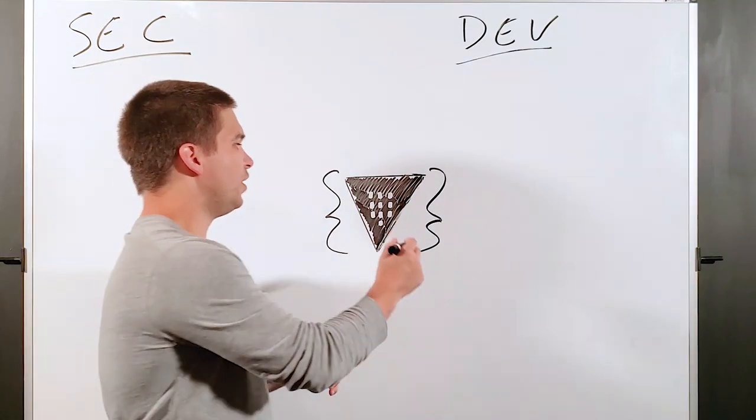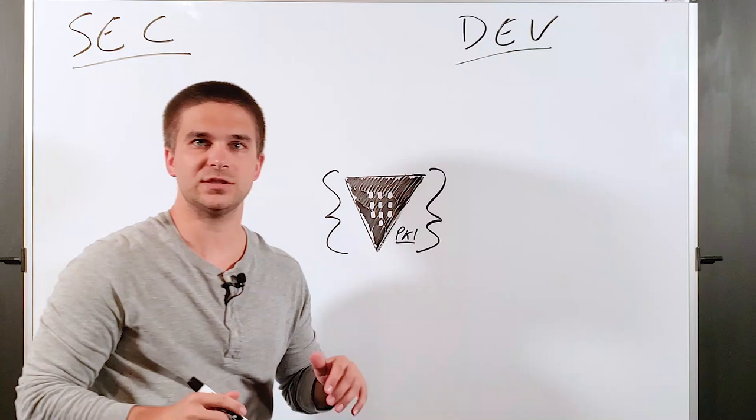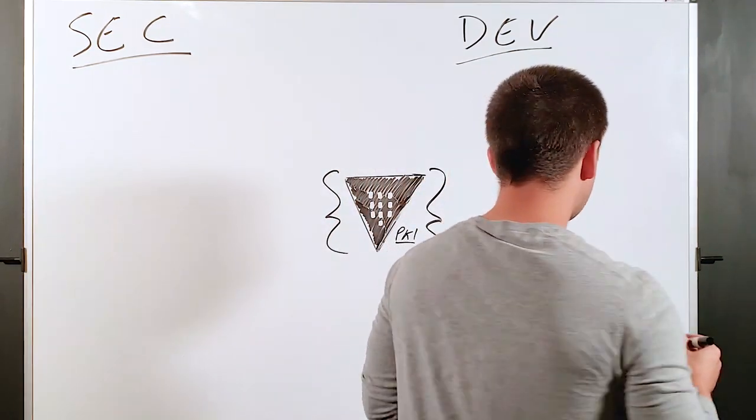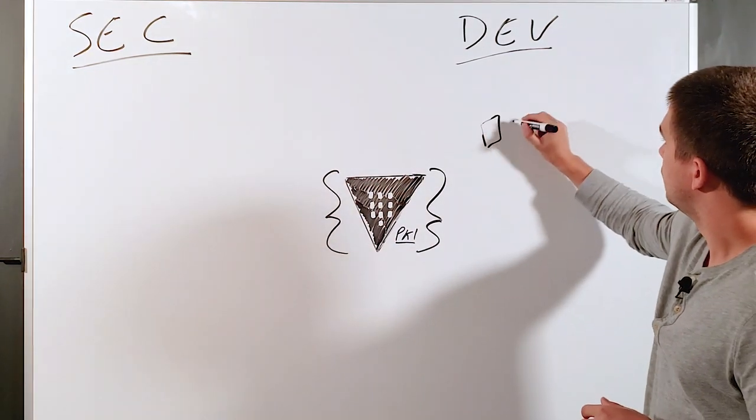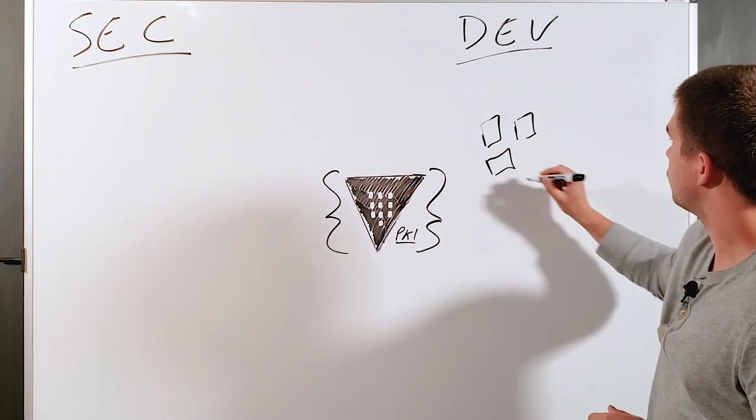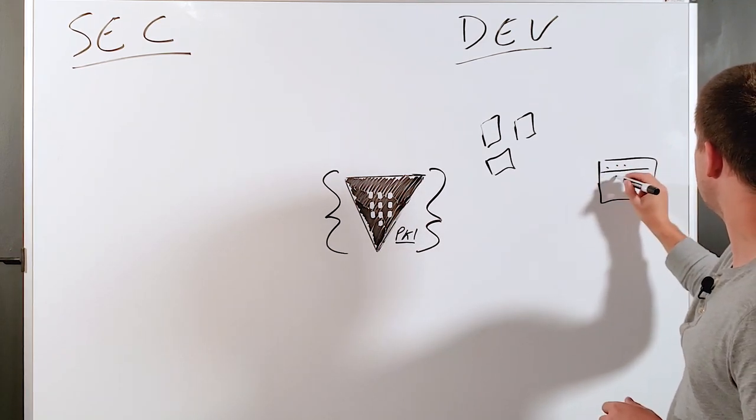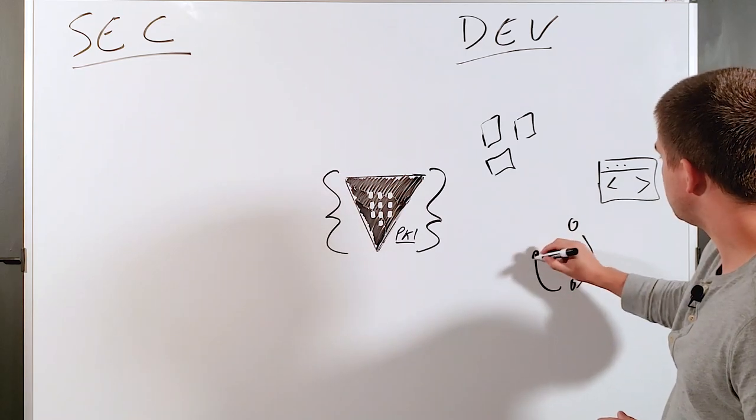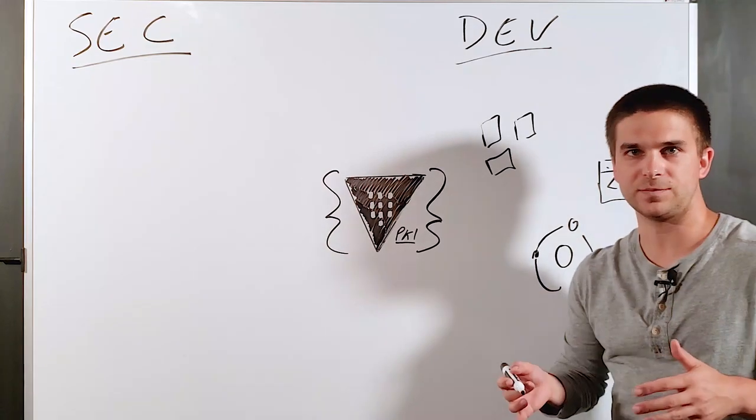The way this works is Vault actually has an onboard PKI secrets engine that comes with it. If I'm a developer building or using containers, like with Kubernetes or I'm interacting with a web application, all of these different microservices involve TLS encryption.